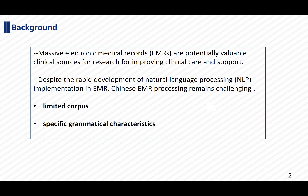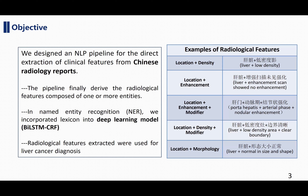Therefore, in our work, we want to design an NLP pipeline for the extraction of clinical features from Chinese radiology reports. Our pipeline could derive radiological features, which are composed of one or more entities. For example, we could combine 'liver' and 'low density' together to form a radiological feature. In the named entity recognition step, also called NER, we also used lexicon features in the deep learning model. With all these radiological features, we used them for liver cancer diagnosis.